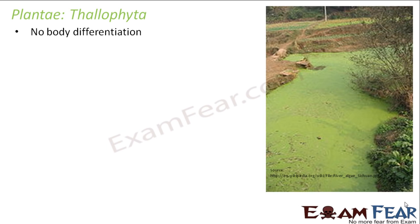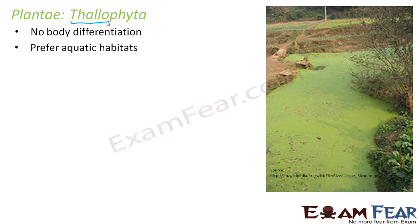What are thallophytes? These are plants with no body differentiation — they do not have a specific root, stem, leaves, or shoot. The term 'thallus' means something vague: a mass of cells not differentiated into anything. 'Phyta' means plants. So plants without any body differentiation are thallophytes. They prefer aquatic habitats; you can see these plants in water. They are less commonly seen on land.